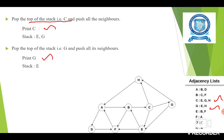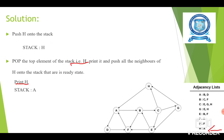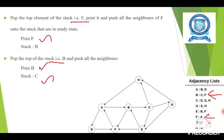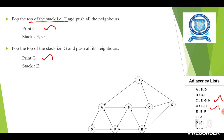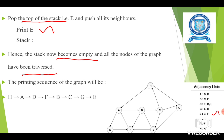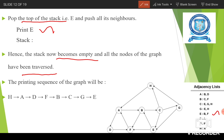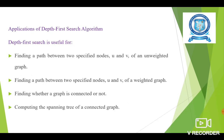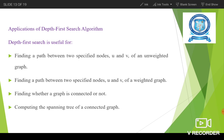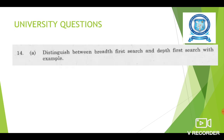The depth first traversal sequence is: H, A, D, F, B, C, G, E. This is the depth first traversal of the given graph. The applications of depth first search include: finding a path between two specified nodes U and V in both unweighted and weighted graphs, checking whether a graph is a connected graph, and computing the spanning tree of a connected graph.